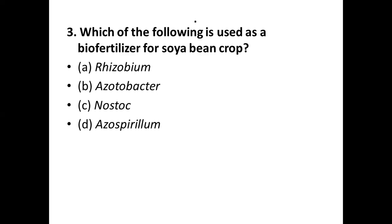Azolla forms a symbiotic relationship with cyanobacteria Anabaena azollae — it's an extracellular endosymbiotic organism that fixes atmospheric nitrogen. Question number three: which of the following is used as a biofertilizer for soybean crop? Options are: (a) Rhizobium, (b) Acetobacter, (c) Nostoc, (d) Azospirillum. The correct answer is option (a) Rhizobium. Soybean is a legume plant belonging to the pea family; it has nodules in its roots which house the symbiotic bacteria Rhizobium, which fixes atmospheric nitrogen.